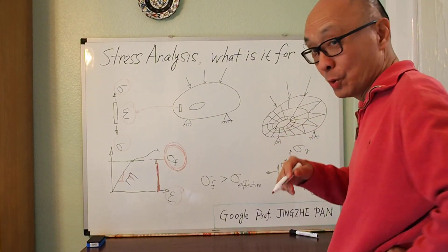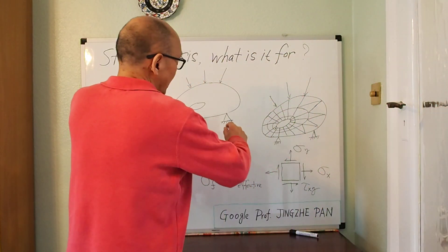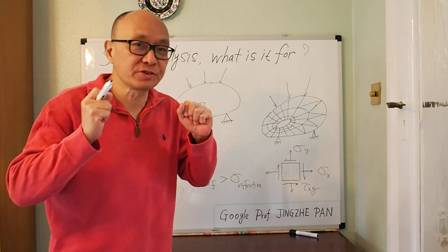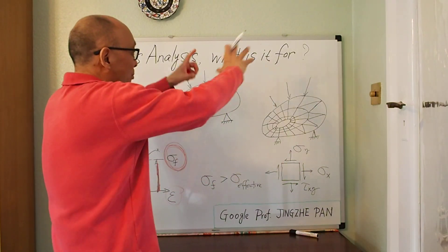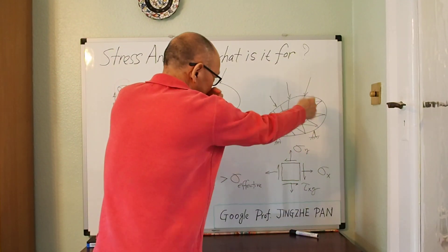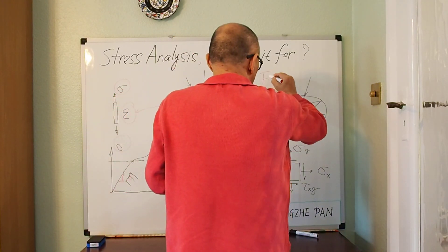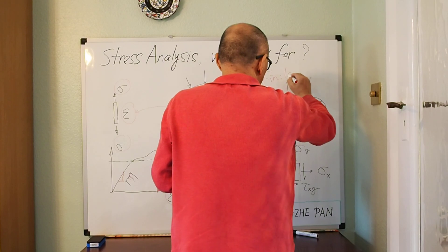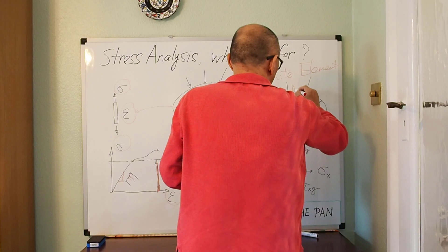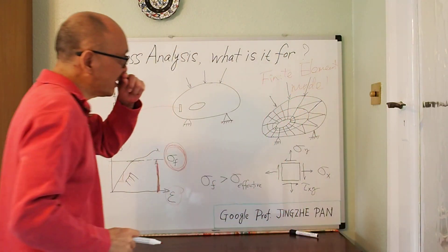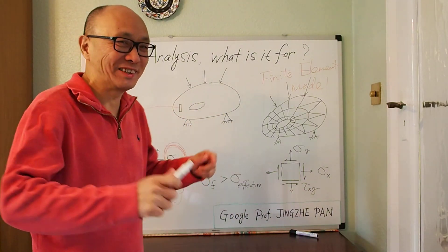Another thing you can do is, we do something called finite element analysis. So what we do is, we pull up a computer software. We divide this structure you are designing into millions and millions of small elements. And so we set up a mathematical model. So this is a finite element model. So we set up a finite element model for the structure. We run the software, click the button.